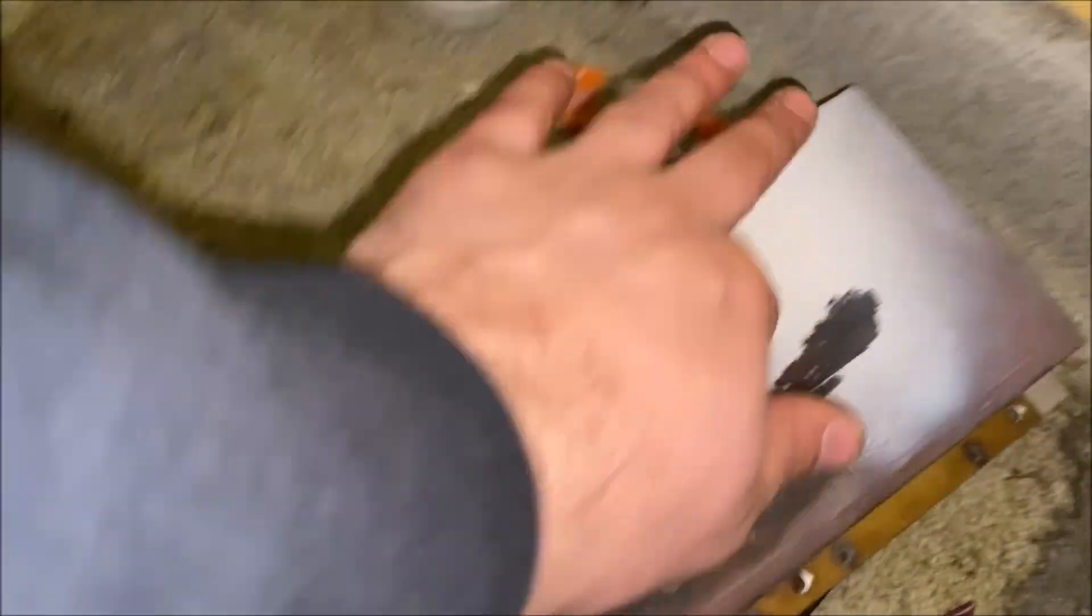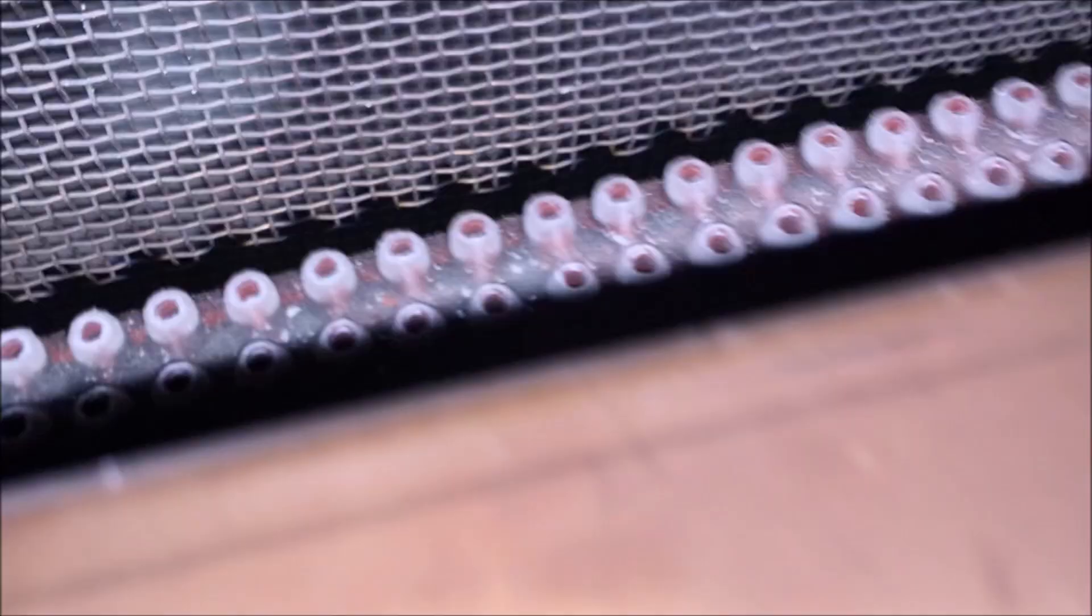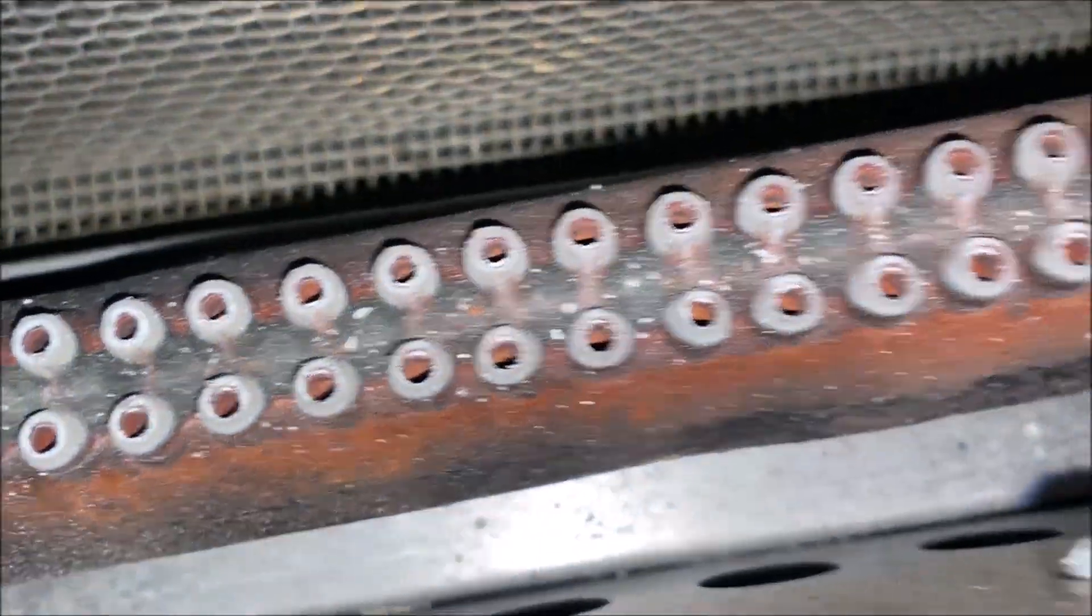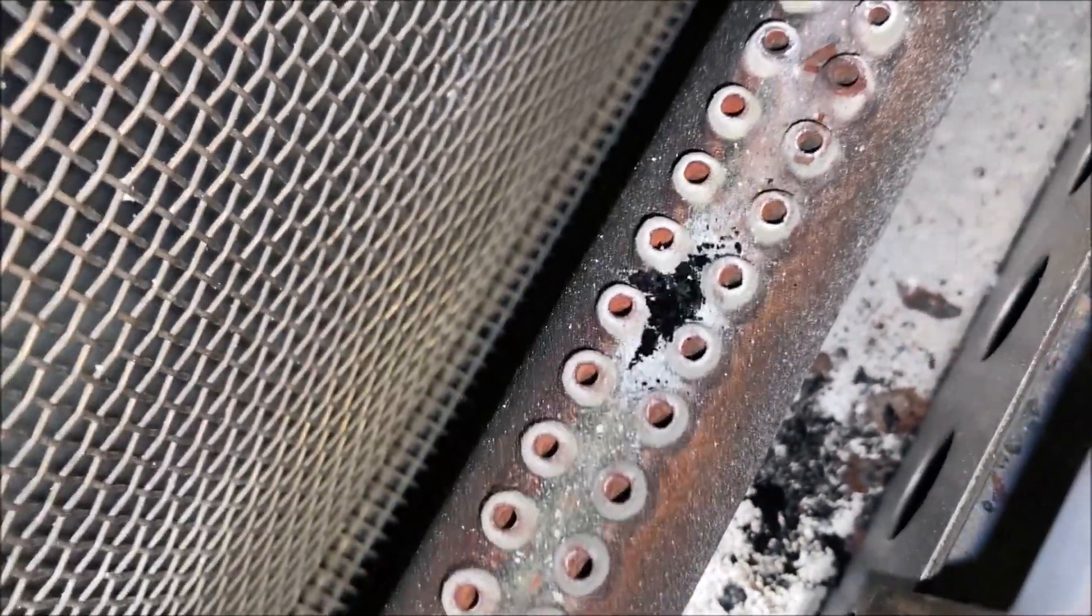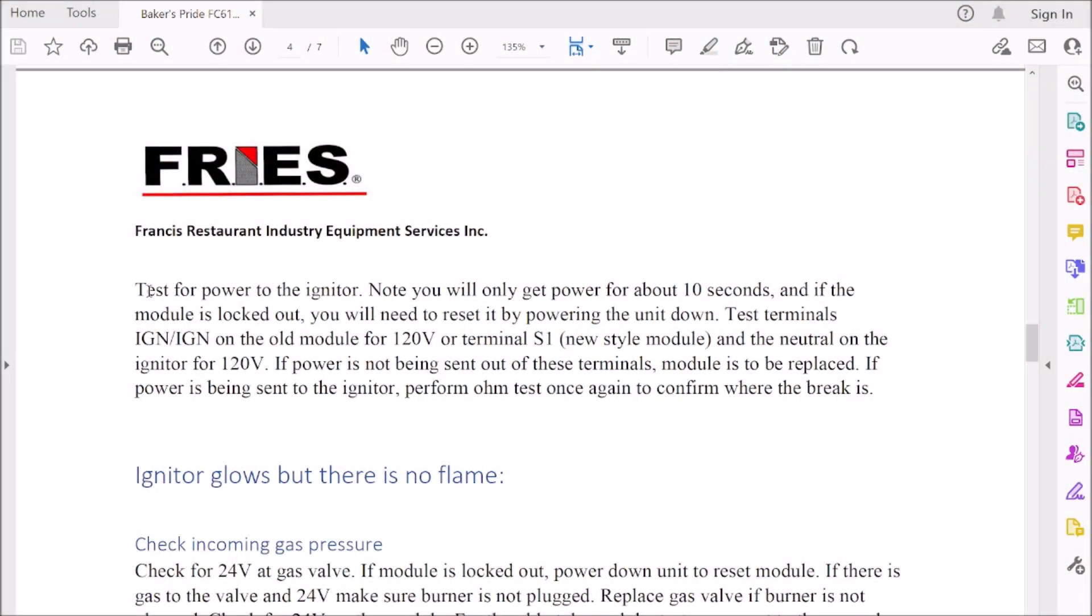We want to make sure we clean off all these panels because this creates the flame to go actually into the hot surface igniter and it will actually burn it out, so it's important to clean these panels and all these hot surface igniter protectors. We also want to check the burner, make sure there's no sooting, make sure all the orifices are clean. We got a little bit of sooting there, we'll get that all cleaned up.